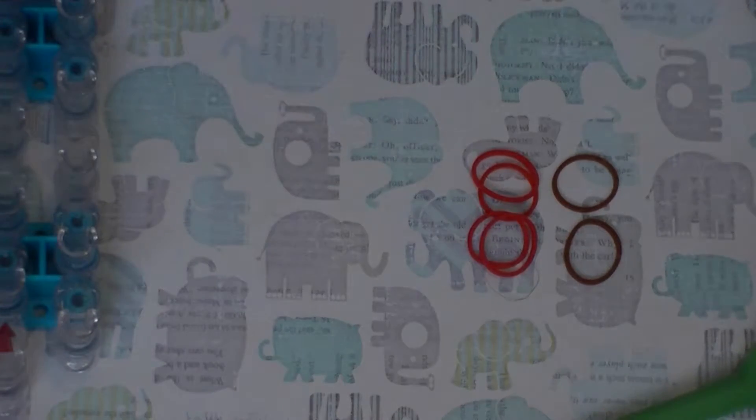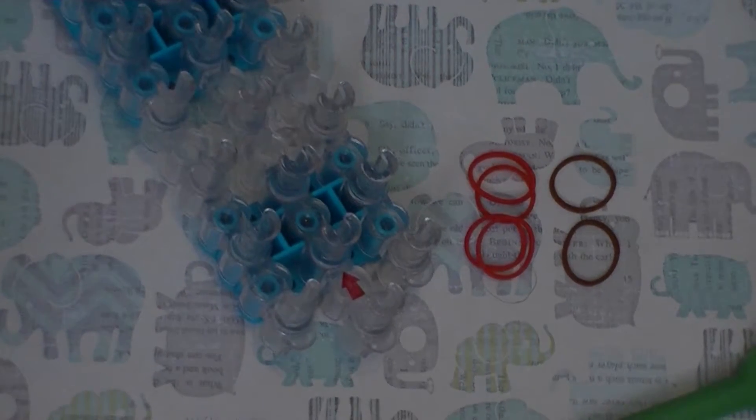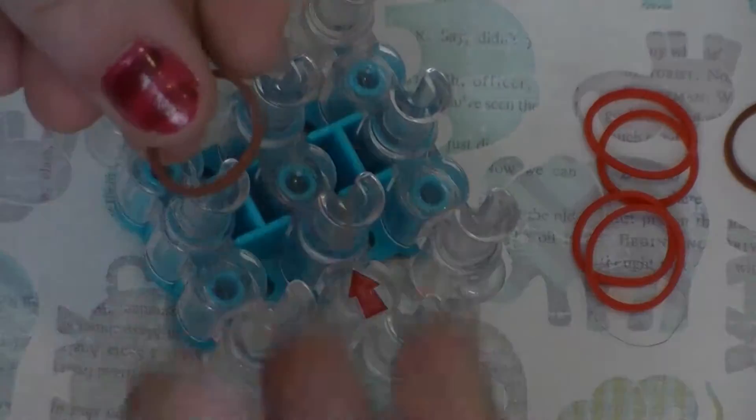I'm going to start off by showing you on the loom. The loom helps quite a bit. Let me just zoom in. Then go ahead and take your stem color and wrap it around two pegs twice as you see I'm doing here.